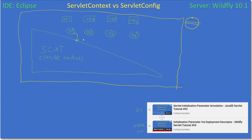Let us consider the servlet examples web application. Inside this web application we have four servlets. As we saw, all four servlets can access a single servlet context object. Inside this servlet context you can store a number of objects using the setAttribute method or even using the web.xml file. All these objects are shared — if there are five objects, all five objects are shared by all the servlets.